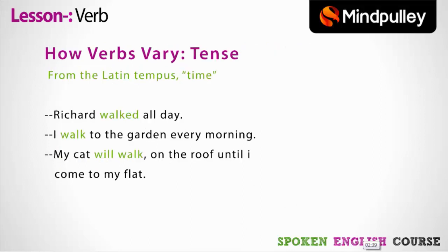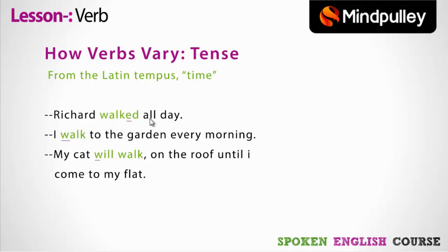Forms of verbs change according to time. When the verb changes according to time, it forms a tense. What is tense? Tense comes from the Latin word 'tempus', which means time. Tense indicates the time in which an action was performed. For example: 'Richard walked all day' — 'walked' is the base form with '-ed' added, making it simple past tense. The time in which the action takes place changes the form of the verb.